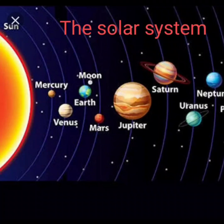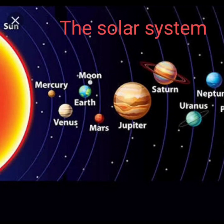The solar system includes the sun, eight planets and their moons. The large, round heavenly bodies that move around the sun are called planets. Each planet moves around the sun in a fixed path that is called its orbit. In this picture, you can see lines drawn here — these are the orbits. There are eight planets in the solar system. From the sun, they are Mercury, Venus, Earth, Mars, Jupiter, Saturn, Uranus and Neptune.